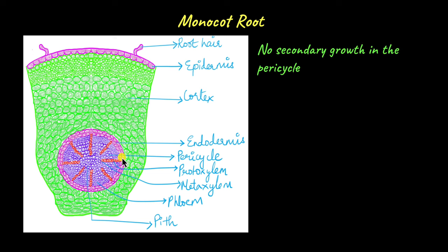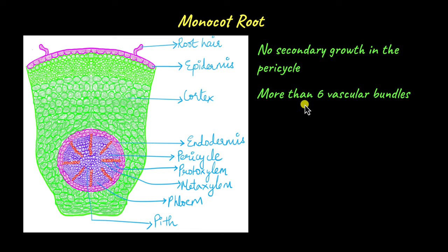There are a few differences between a monocot root and a dicot root. Monocot roots do not undergo secondary growth, so the cells of the pericycle are not involved in secondary growth in monocots. Monocots have more than six vascular bundles.